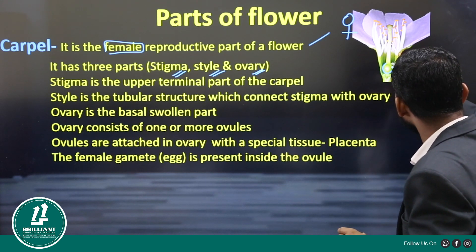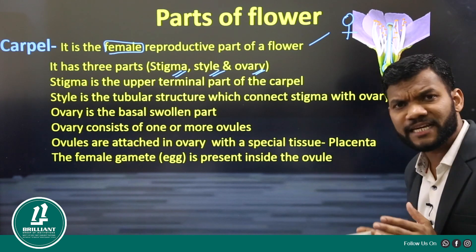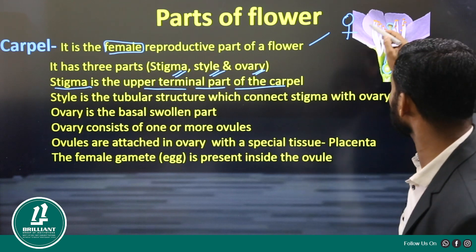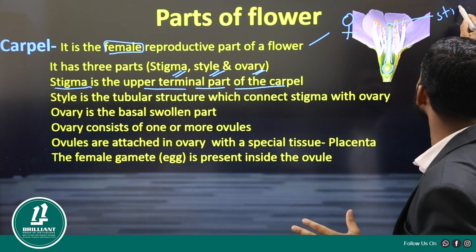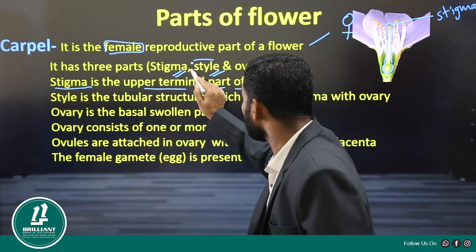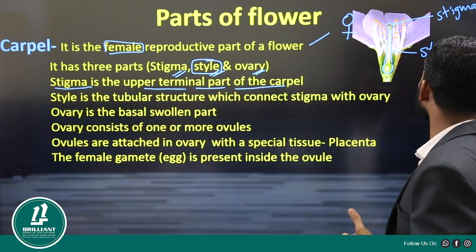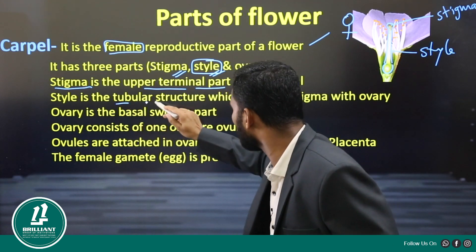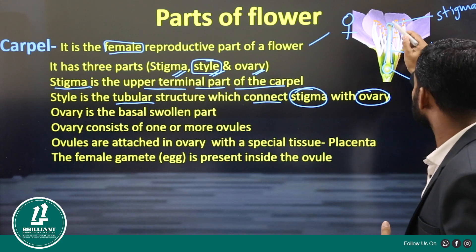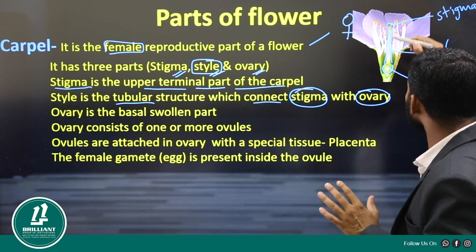Looking at the diagram, this is the ovary — the lower part. This is the style in the middle, and the upper terminal part is the stigma. Stigma is the upper terminal part of a carpel. The style is a tubular structure which connects the stigma with the ovary.